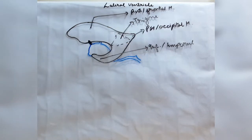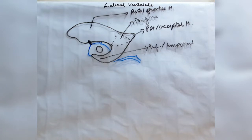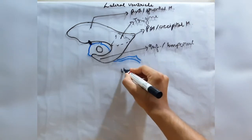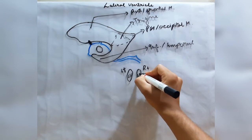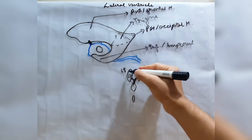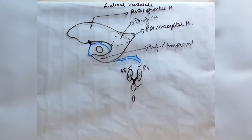The lateral ventricle is connected with the third ventricle by a foramen called the foramen of Monroe, also called the interventricular foramen because it connects two ventricles. The foramen of Monroe is a Y-shaped communication between the left and right lateral ventricles and the third ventricle.